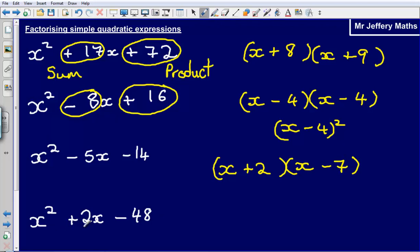And then lastly, x squared plus 2x minus 48. Two numbers that will multiply to make minus 48 and sum to make plus 2, that's going to be plus 8 and minus 6. So x plus 8, x minus 6. And plus 8 multiplied by minus 6 gives us minus 48. 8 minus 6 gives us plus 2.